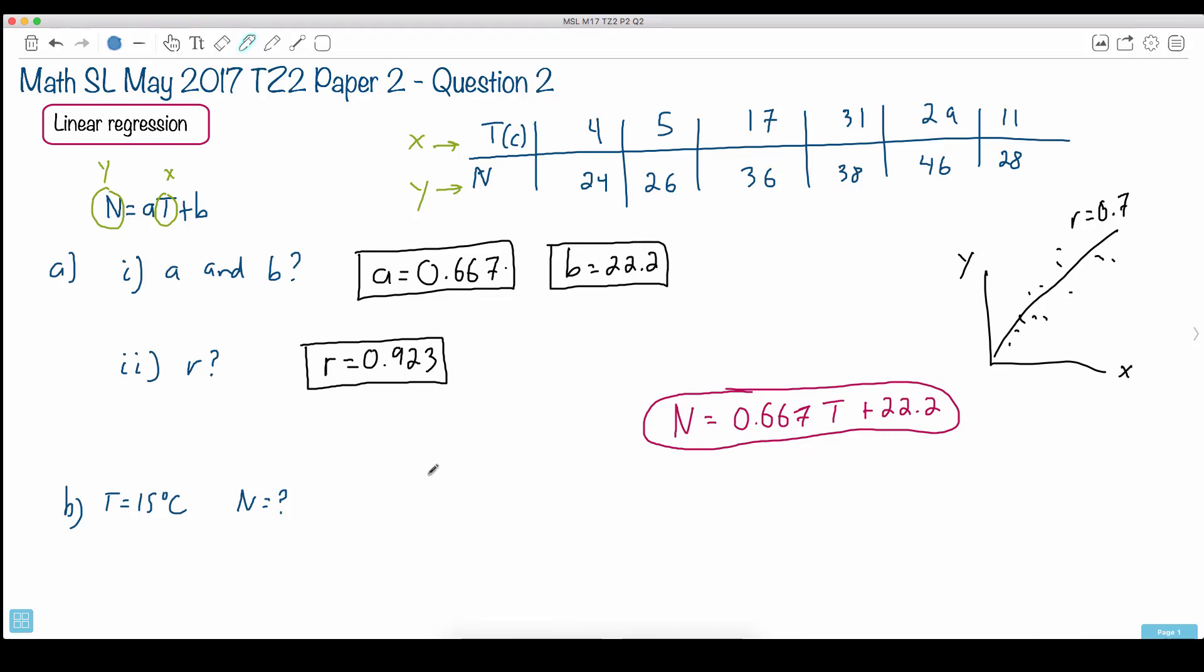So in part B, no big surprise here, they ask you to predict. They tell you that temperature is 15 degrees Celsius, what's N? What's the number of visitors?